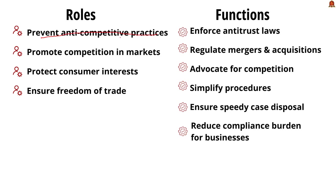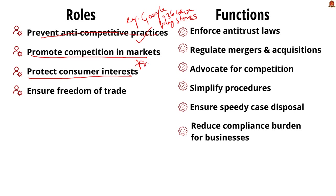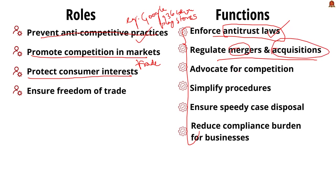The CCI's roles include: preventing practices having adverse effects on competition — for example, the CCI imposed a penalty of ₹936 crore on Google for abusing its dominant position with respect to Play Store policies. It also promotes and sustains competition in the market and ensures freedom of trade for all market participants. Its functions include actively enforcing laws against anti-competitive practices, regulating mergers and acquisitions, and simplifying procedures. CCI is a statutory body with a chairperson appointed by the central government, with the main goal of maintaining competitive culture in the Indian economy.